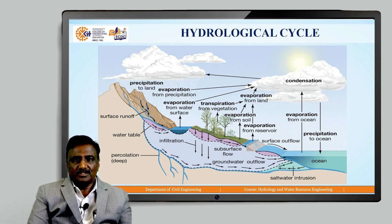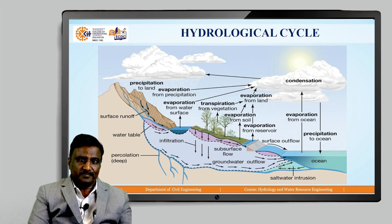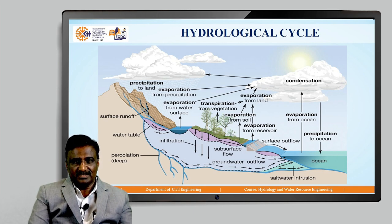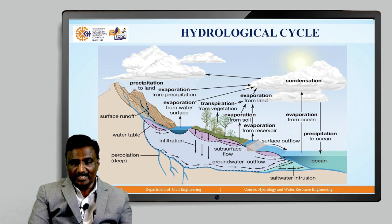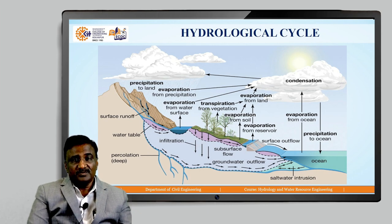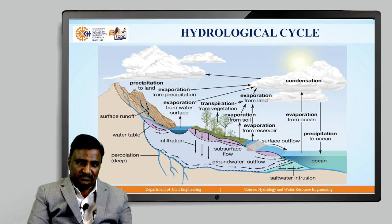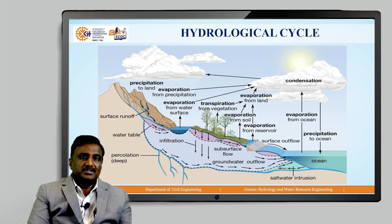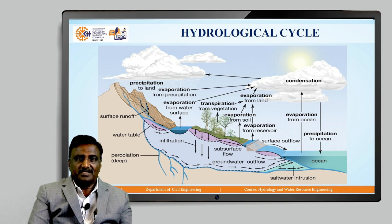While coming back to the earth's surface, a certain amount of water is absorbed by vegetation — this is called interception. The remaining water which falls on the surface first fulfills the moisture condition of the surface soil, then starts moving along the earth's surface. This process is called surface runoff. After some time, the water starts percolating inside the earth's surface and starts moving below.